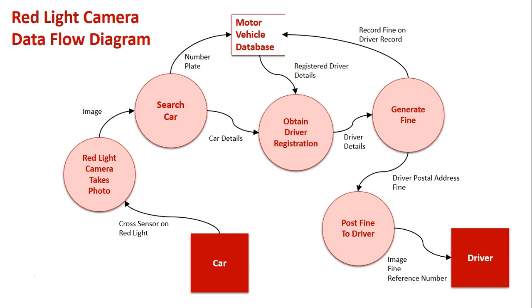I hope this gives you an overview of how the red light camera information system works, and the processes taking place — all being initiated with the red light camera as the collecting process, gathering the data about the car, then searching for the driver using the car data against the motor vehicle database, then the generation of the fine, which is then delivered to the driver.